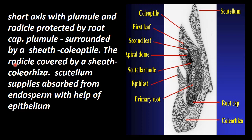The radicle is surrounded by a sheath called coleorhiza. This is the radicle and this is the root cap, surrounded by cells — this is called coleorhiza. These two are undifferentiated cells.